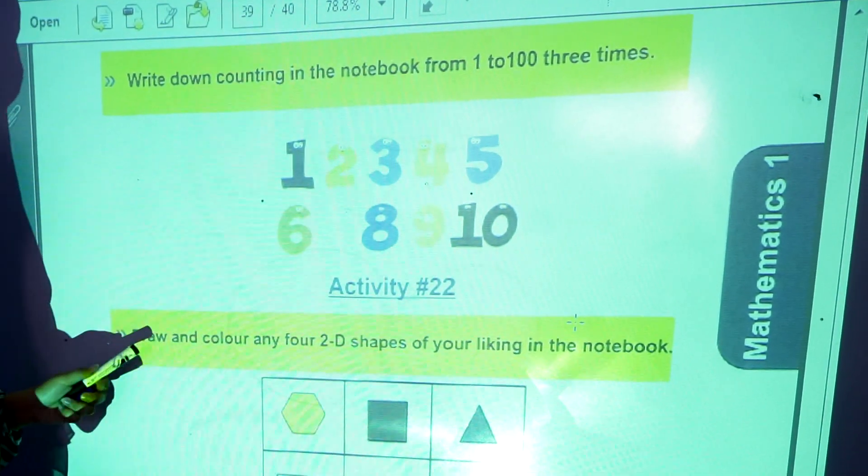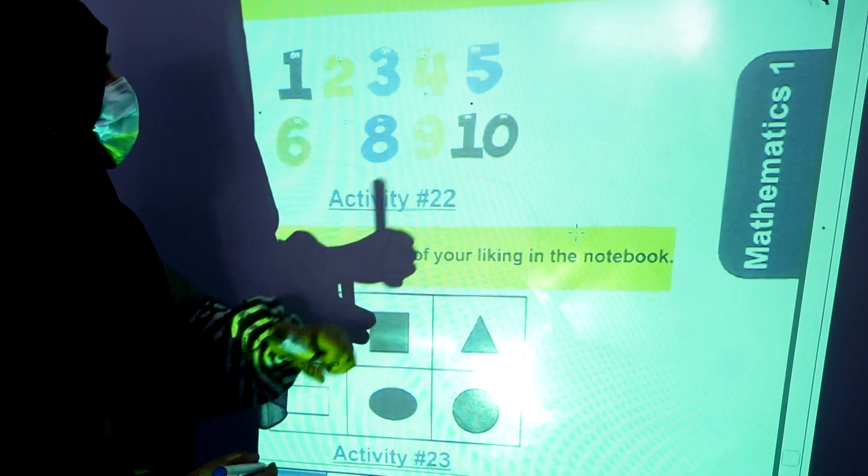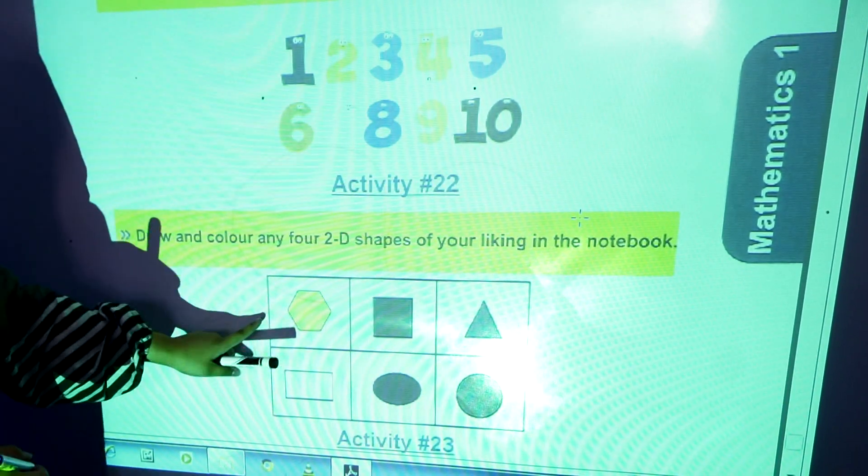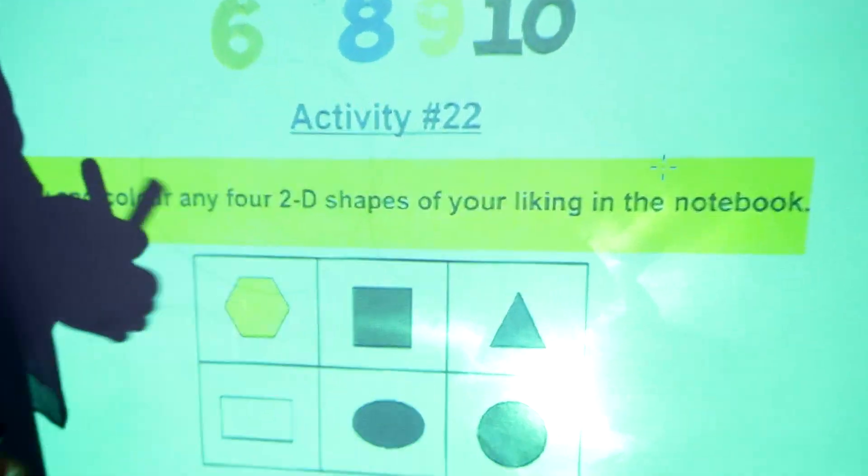Activity number 22, draw and color any 4 2D shapes of your liking in the notebook. You will draw any 4 shapes among them in your notebook.